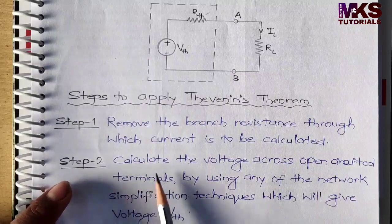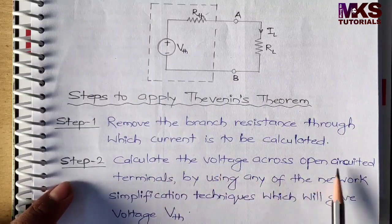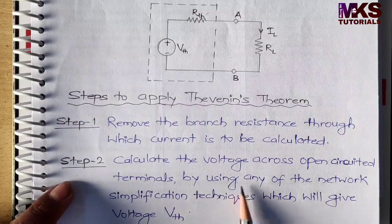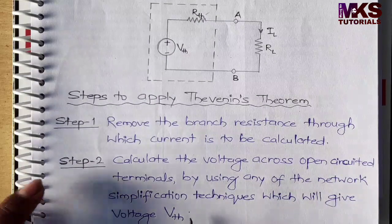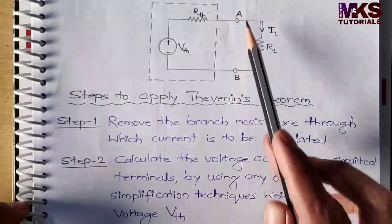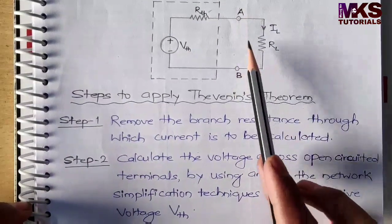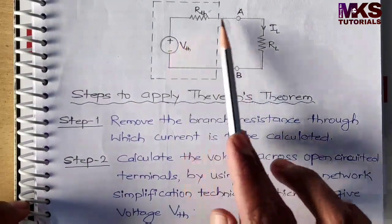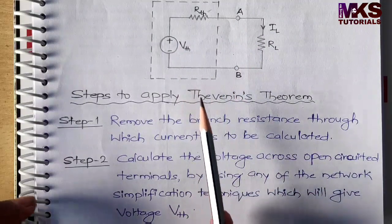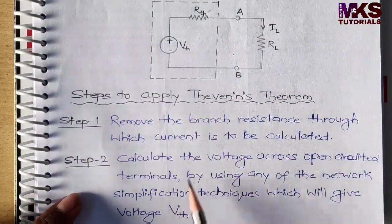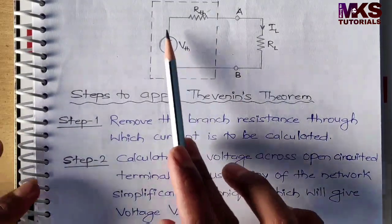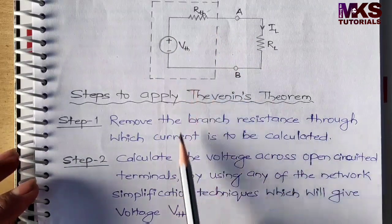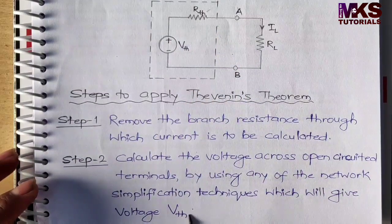Step 2 — Calculate the voltage across the open-circuited terminals by using any of the network simplification techniques, which will give you voltage VTH. उस open circuit — जैसे AB terminals में रखेंगे — जैसे इसको remove कर दोगा तो ये मेरा open circuit हो जागा, तो इसके across मैं voltage measure कर लूँगा। हमारे पास दो method हैं — nodal और mesh — किसी को भी लगाके हम equivalent voltage निकाल देंगे, that is VTH.